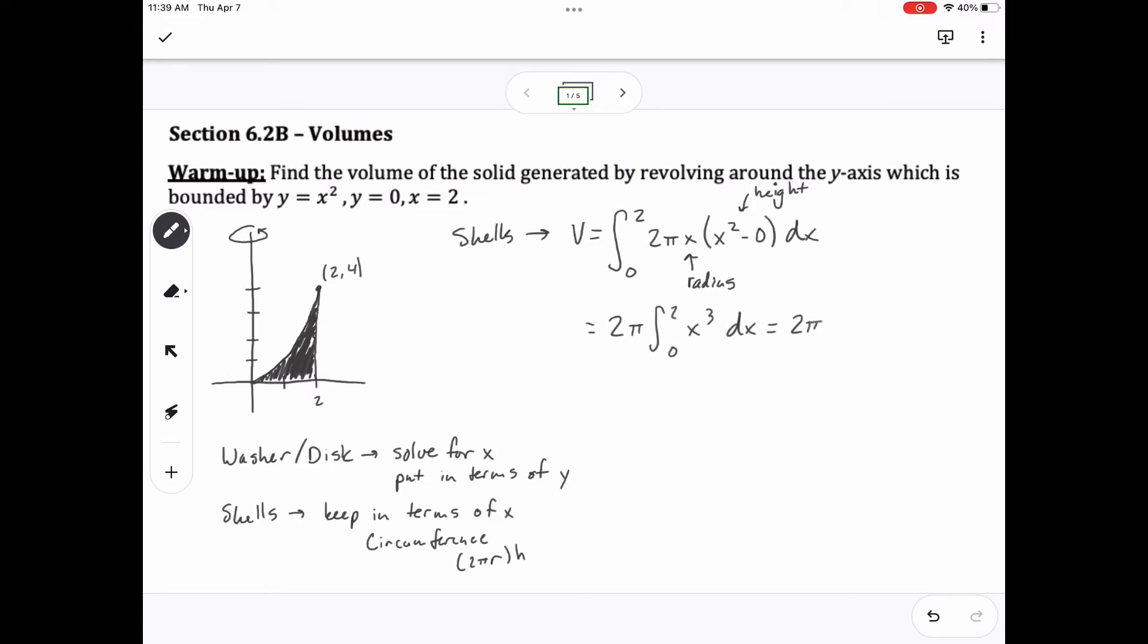I'll move the 2 pi out, and then I'll take the antiderivative of x cubed, which gives me x to the 4th divided by 4. Then I'll plug in 2 and 0. Plugging in 0 gets me nothing, so I'll just have 2 pi times 4, which is 8 pi for our volume.